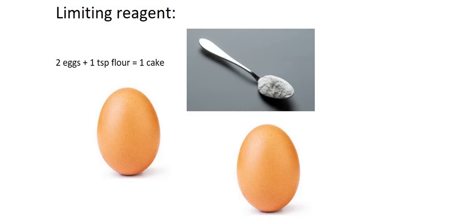So let's say we look in a recipe book, and the recipe book tells us two eggs plus one teaspoon of flour gives us a cake. So everything looks good here — we've got one teaspoon of flour, and we've got two eggs. Fantastic.